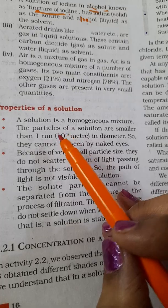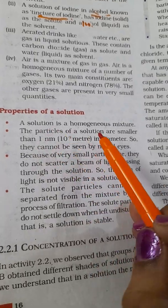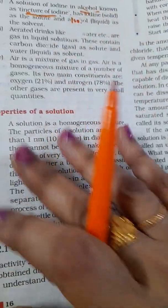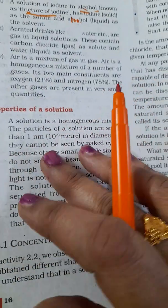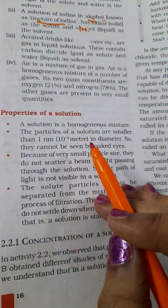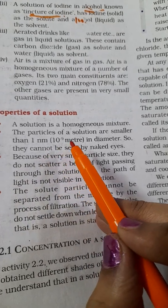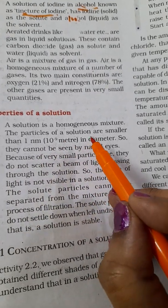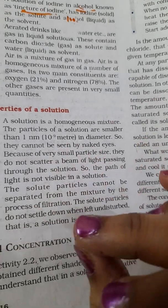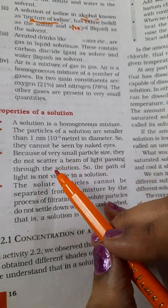What are the properties of a solution? First of all, solution is a homogeneous mixture, it is uniform throughout everywhere. And the particles of a solution are very small, that is 1 nanometer, 10 raise to minus 9 meter in diameter. You cannot see by naked eye.